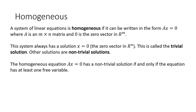Just think about why that is. When we have no free variable but we have a solution, it means we have a single solution. In this case, for a homogeneous system, a single solution means the zero vector. We already know it's a solution. No free variable means there is only one solution, and it is the zero vector. This is why free variables and non-trivial solutions go together.